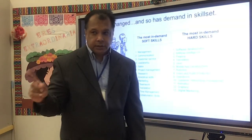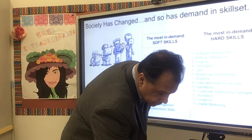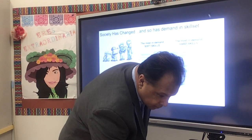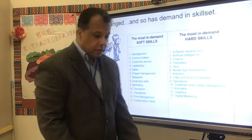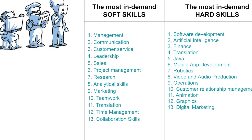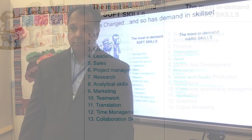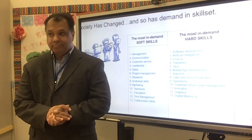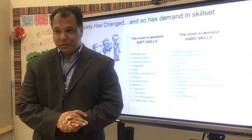The most important soft skills you can teach your kids are management, communication, customer service, leadership, sales, project management, teamwork, and marketing. The hard skills are all computer-related: software development, artificial intelligence, finance, Java, mobile apps, robotics, video and audio production - that's where I come in - operations, animation, customer relations, graphics, and digital marketing. So I'm teaching the right thing, and so are many of you. Now if you teach math and science, you're still teaching the right thing, except that right now with AI, that's a whole new world.